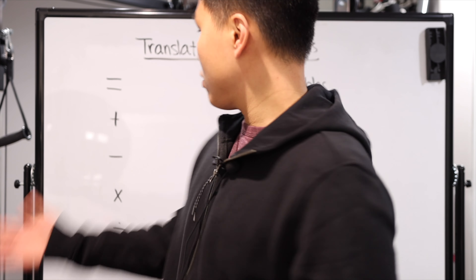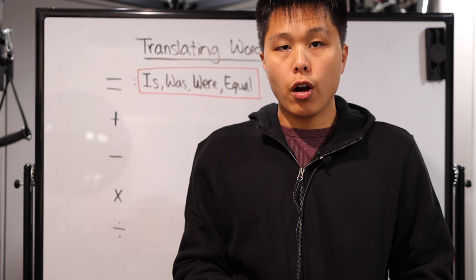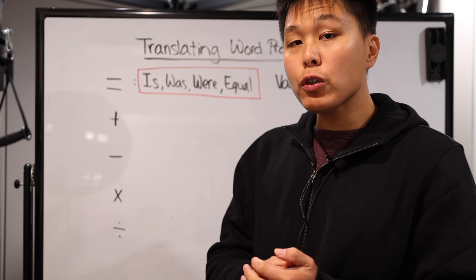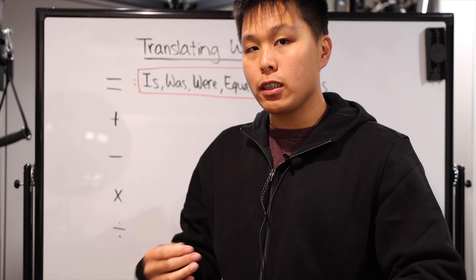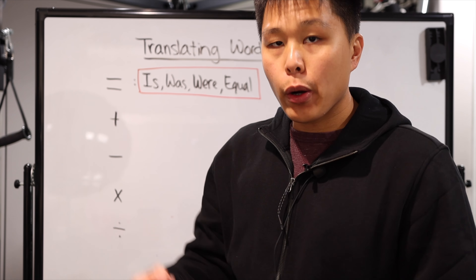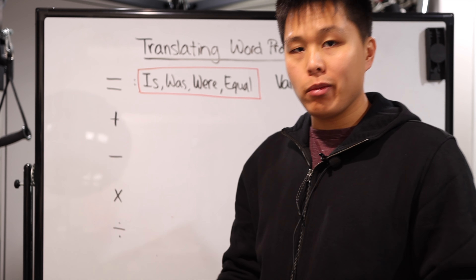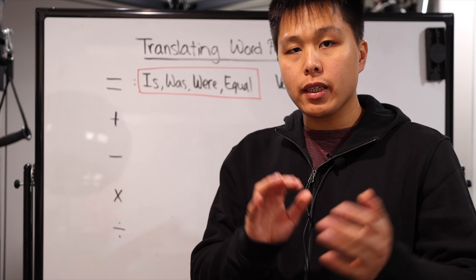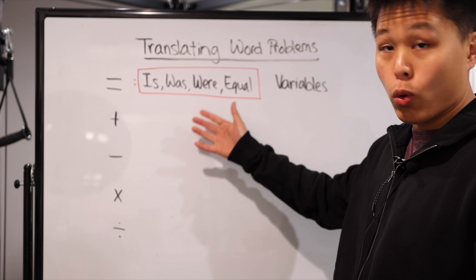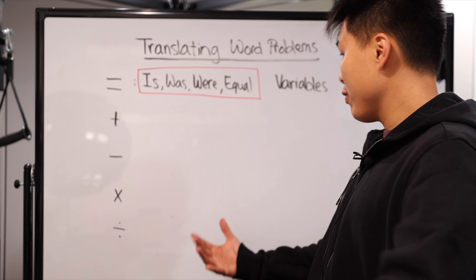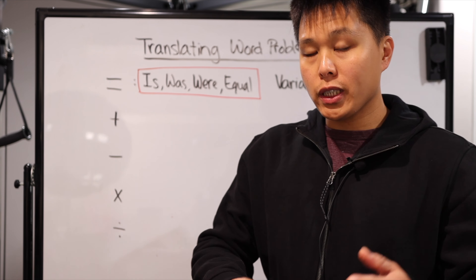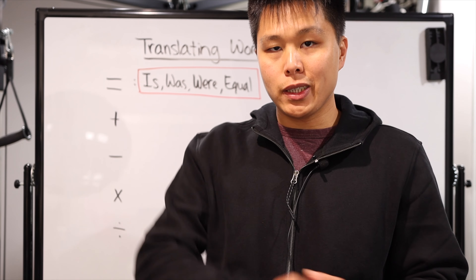So let's begin with the first and foremost: the equal sign. It doesn't mean that every time you see these words, it's guaranteed to be an equal sign. Once again, you need to understand the context of what the problem is asking. However, most of the time if you see these words — is, was, were, or if you're lucky, they just use the word 'equal' — it most likely can translate into an equal sign.